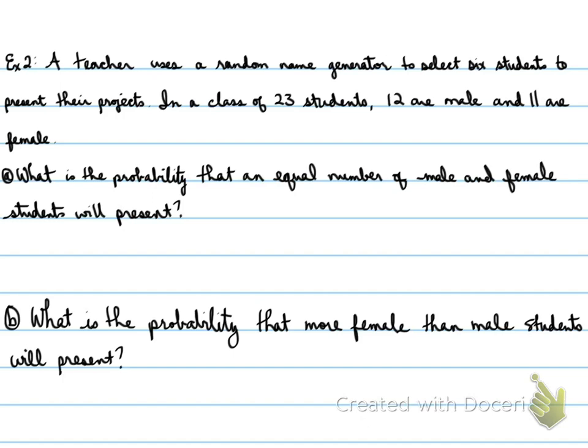A teacher uses a random name generator to select six students to present their projects. In a class of 23 students, 12 are male and 11 are female. What is the probability that an equal number of male and female students will present? Part B, what is the probability that more female than male students will present?